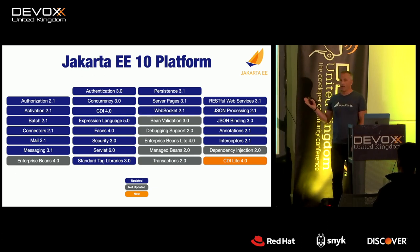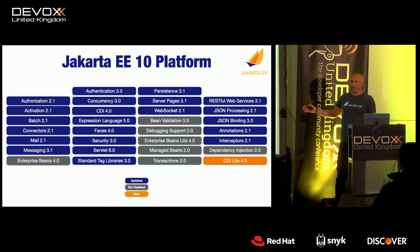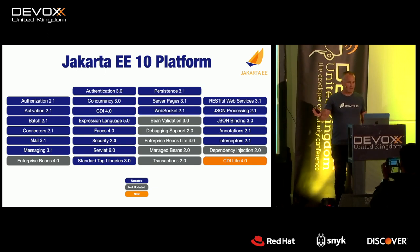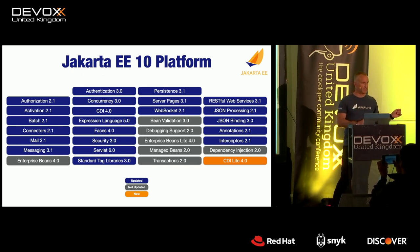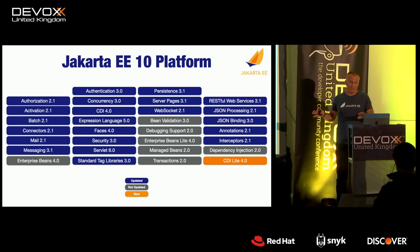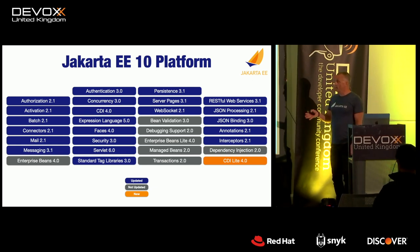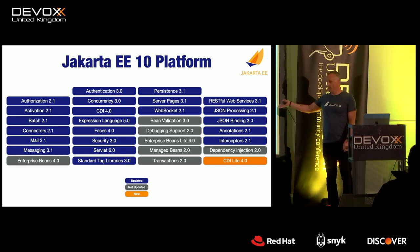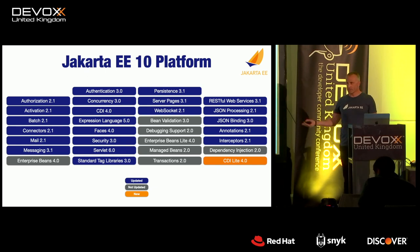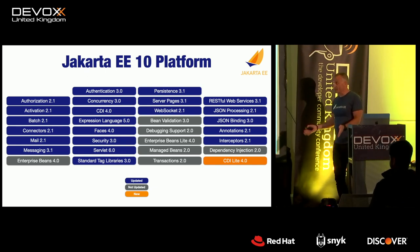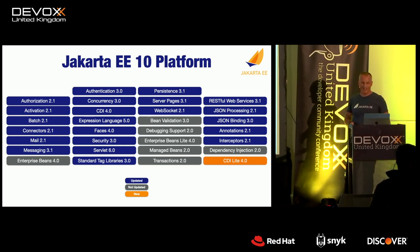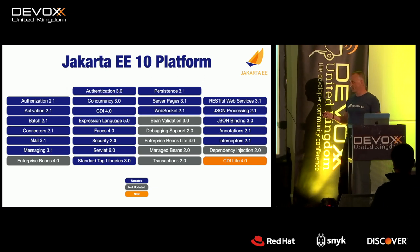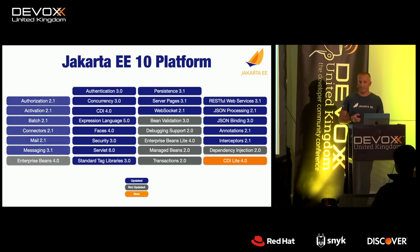Jakarta EE is a lot of specifications, and all the blue ones were updated for EE10. We tried to do semantic versioning: .0s are major updates that may have backwards-incompatible changes, and .1 releases are minor updates from previous versions. There is one yellow spec in the corner — CDI Lite — which is actually a part of CDI, but we want to highlight it as a new specification. The gray ones weren't updated for EE10; they're the same version as EE9.